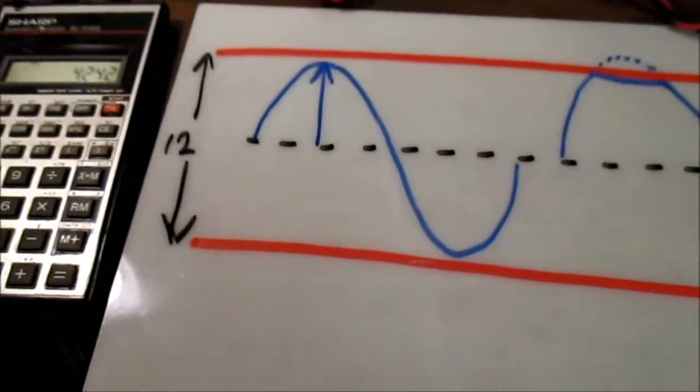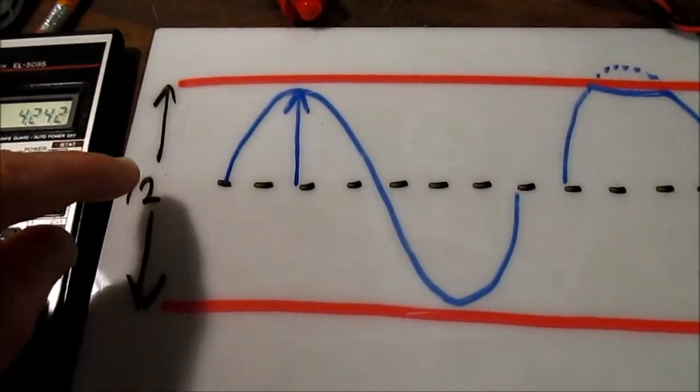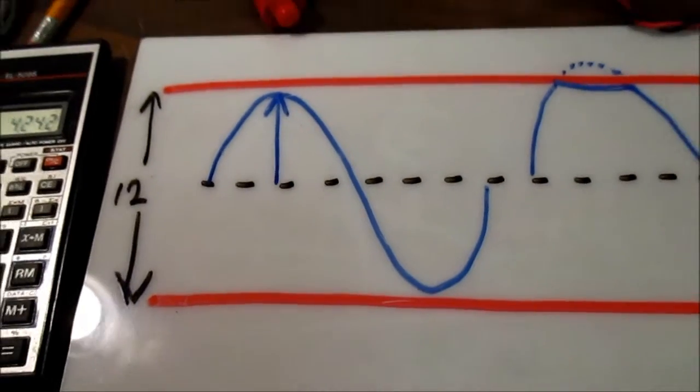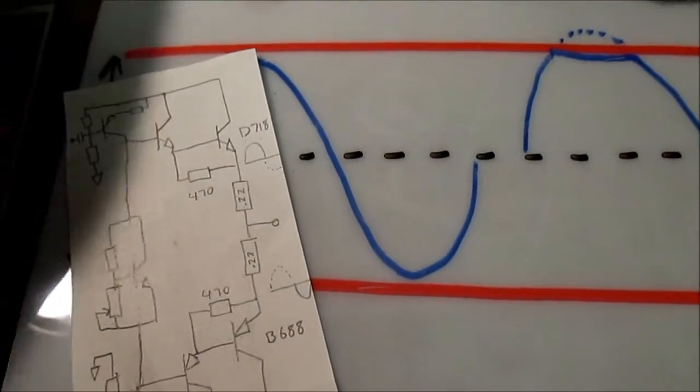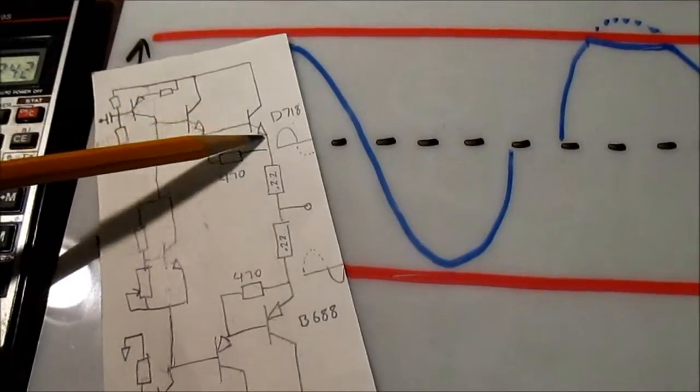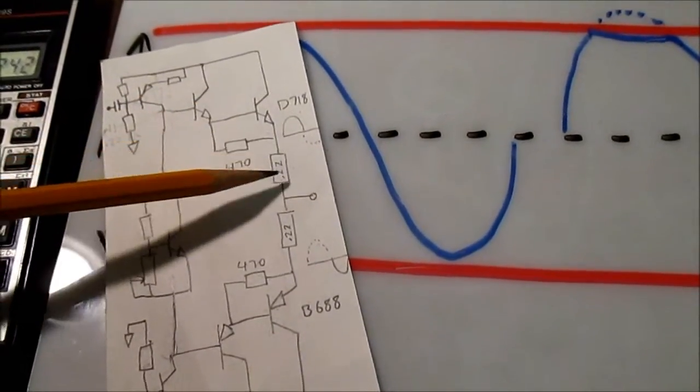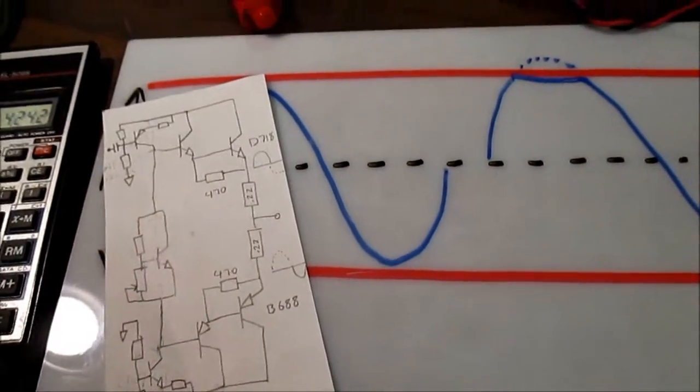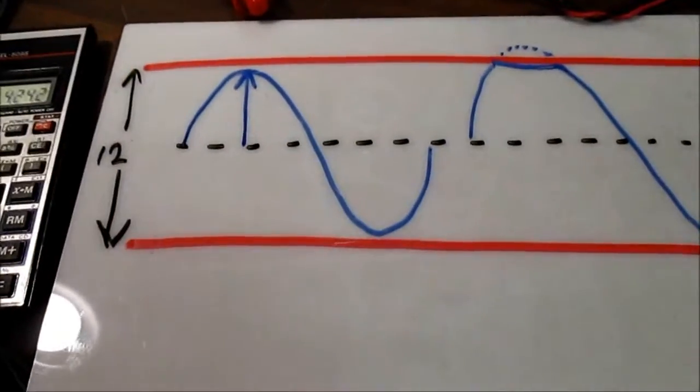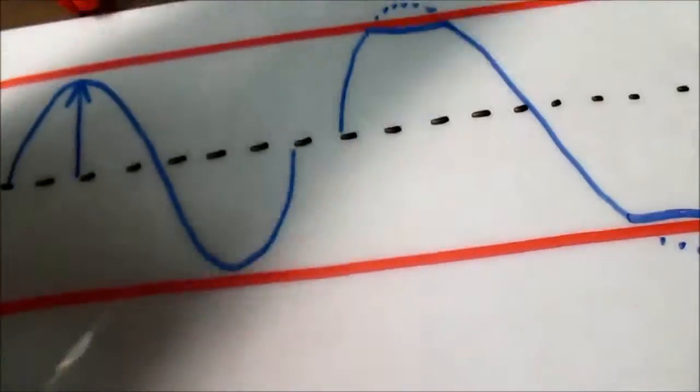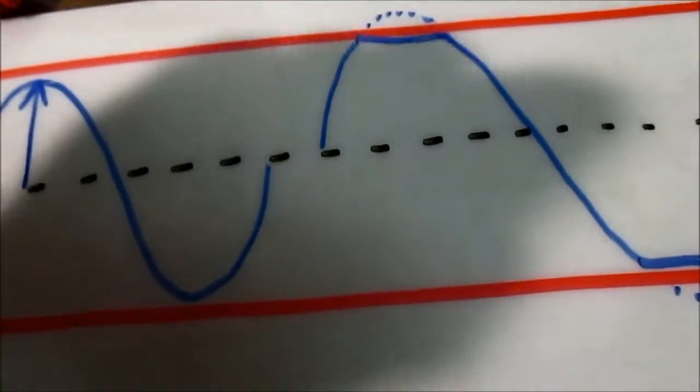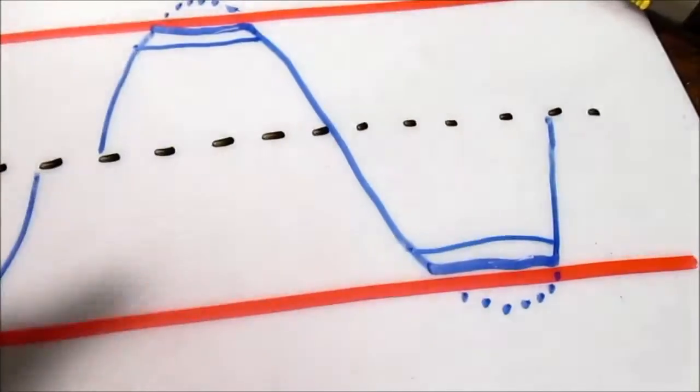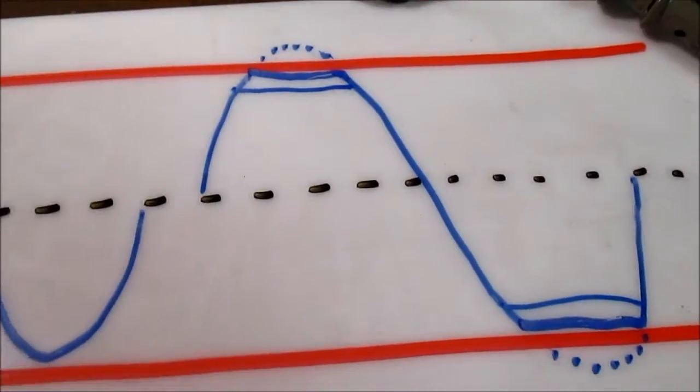Now there's one problem. Amplifiers, in reality, cannot swing all the way up to the rails. There's losses inside the amplifier - there's going to be some loss across the transistors, emitter resistors if it has them on both sides. So you do lose some of that voltage. So what happens is the amplifier actually clips a little bit less than the supply voltage. It can't quite go to the rails.